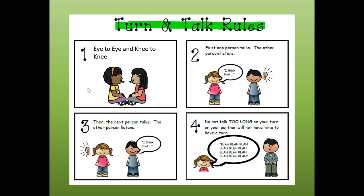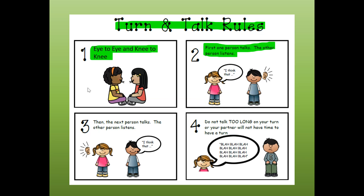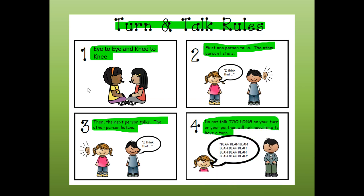Let's briefly go over our turn and talk rules. If you have a partner at home, you're eye to eye and knee to knee — number one. Number two, first one person talks, the other person listens. And of course, if you don't have a partner, you're my partner, and I will talk first while you listen, and then you will talk. Do your best saying your answer out loud. Don't talk too long or your partner will not have time to have a turn.